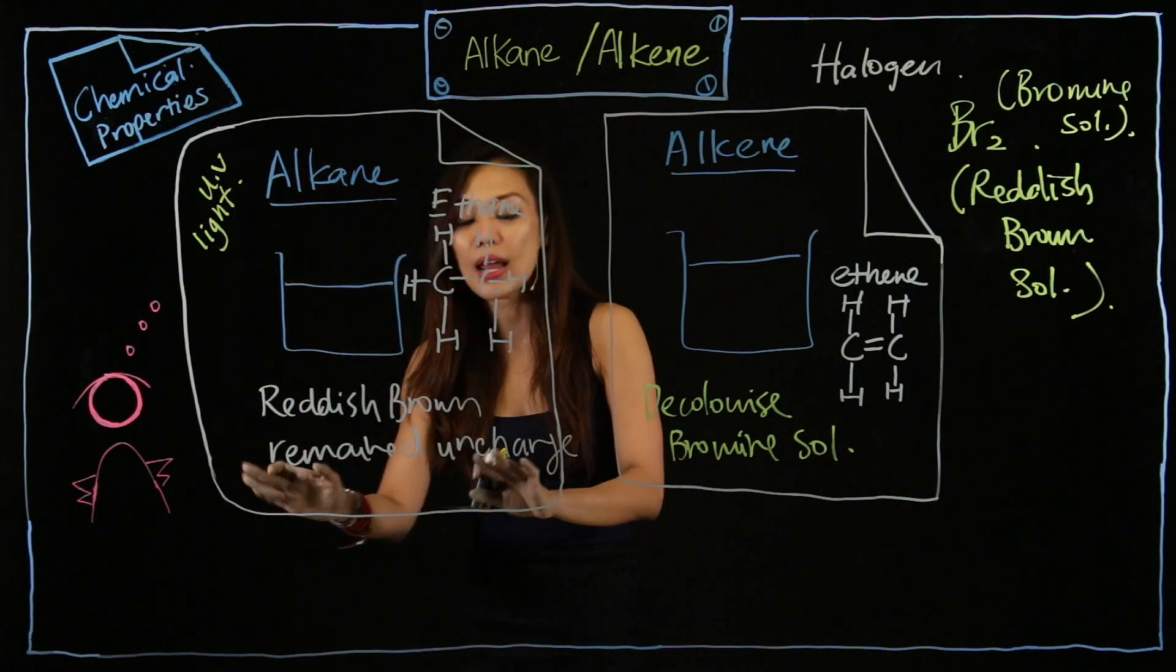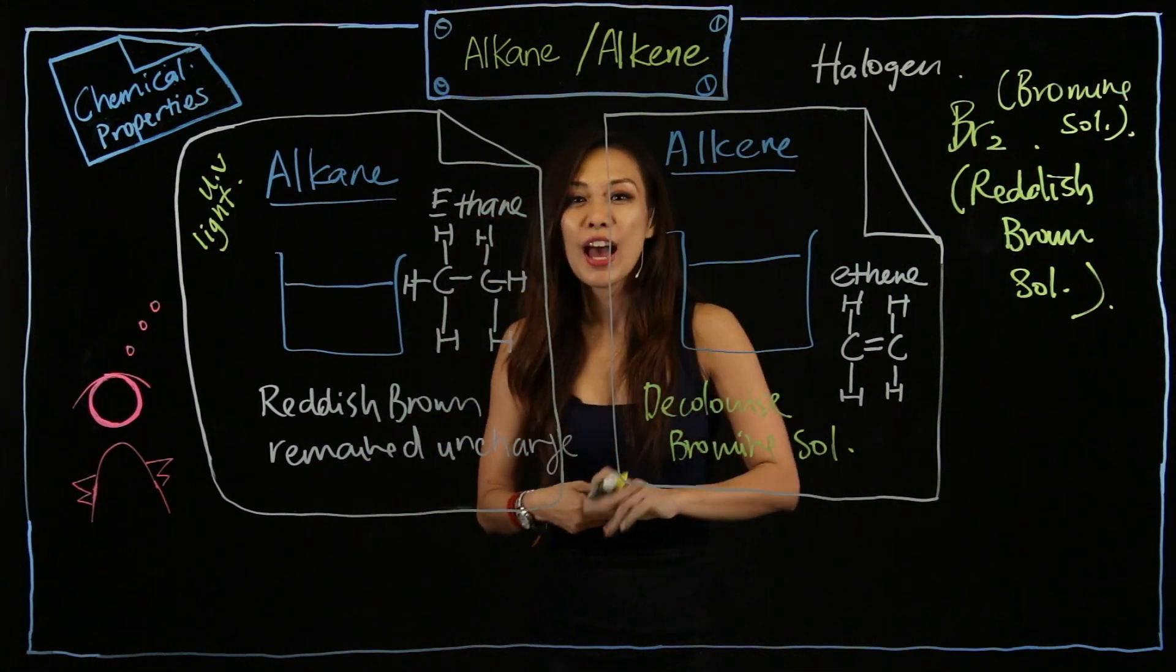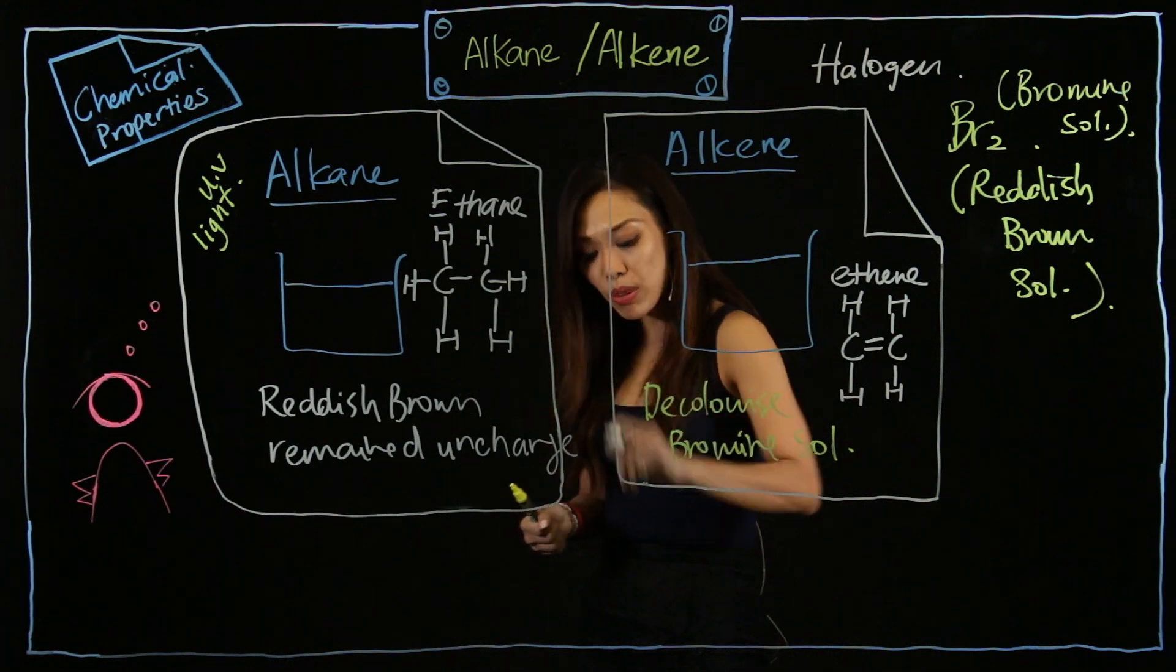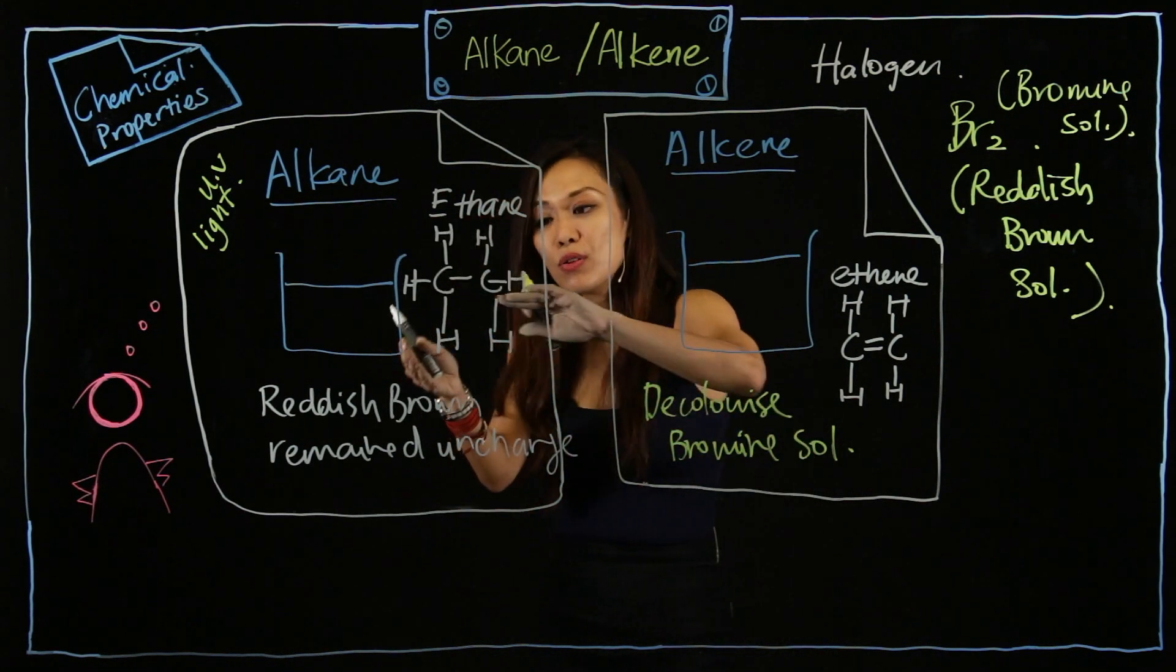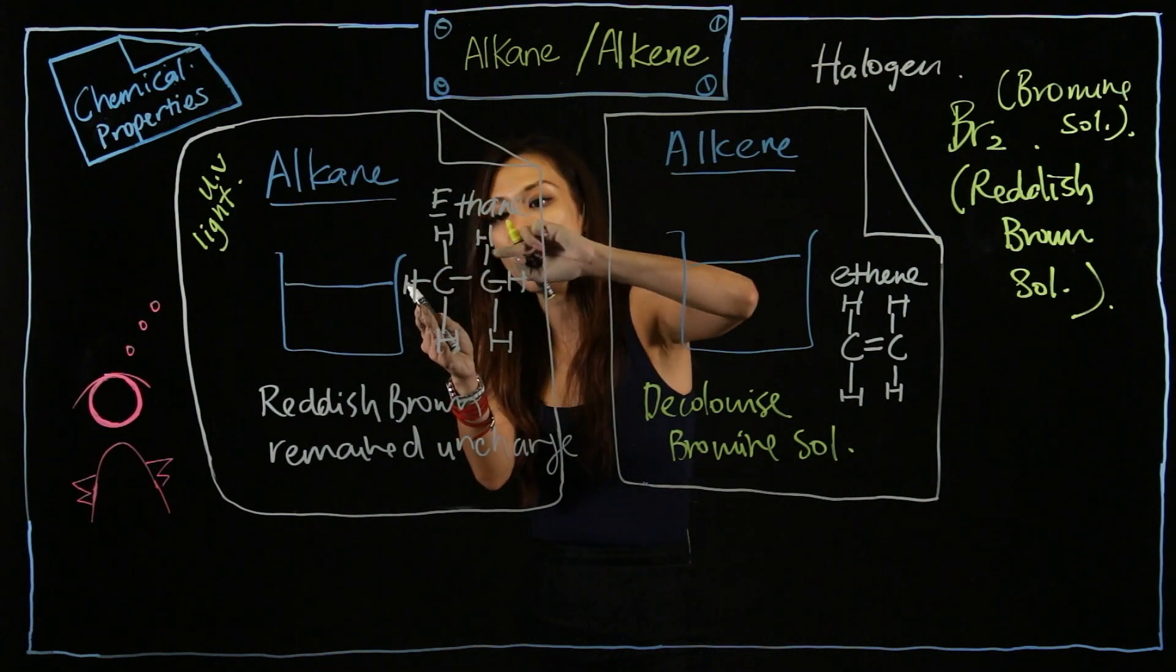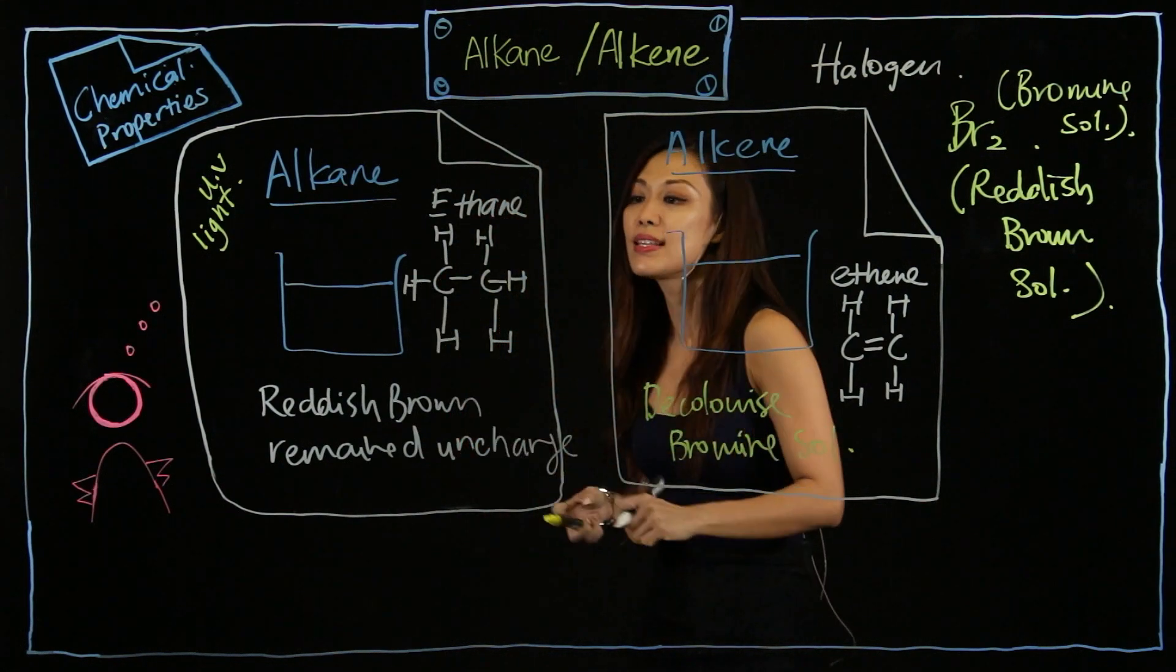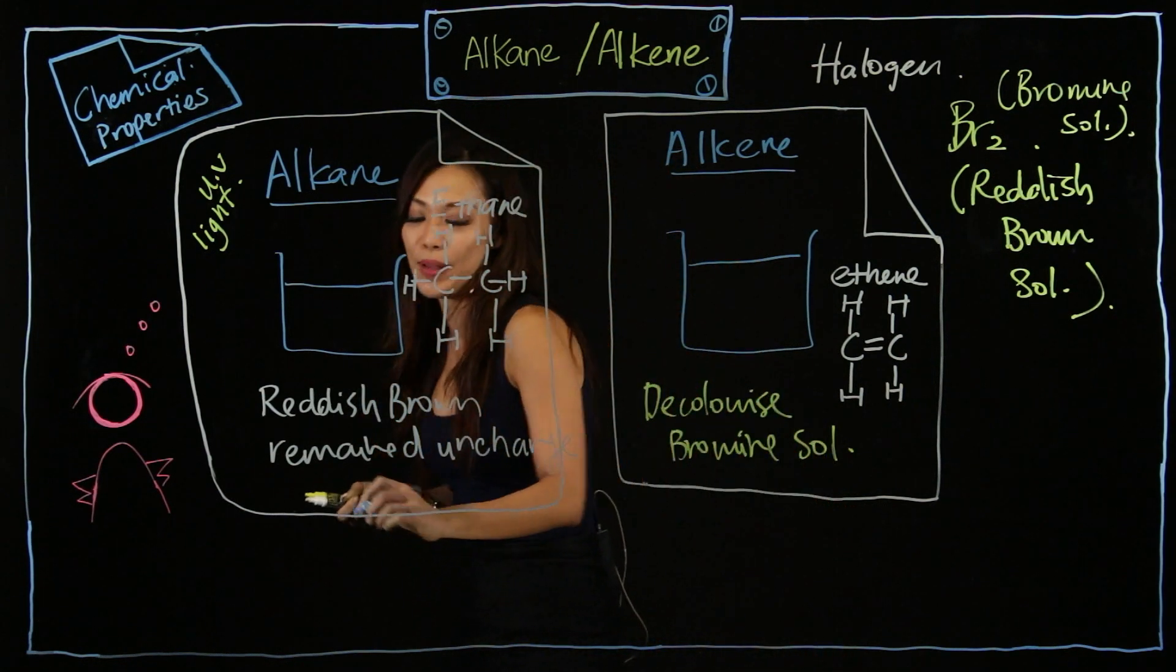But if this is an alkane, you will just remain as reddish brown. Now I'm going to bring you further. I'm going to introduce you one more word. For alkane, because all the bonds are used up, can you see they are all single bonds? We call this saturated hydrocarbon.